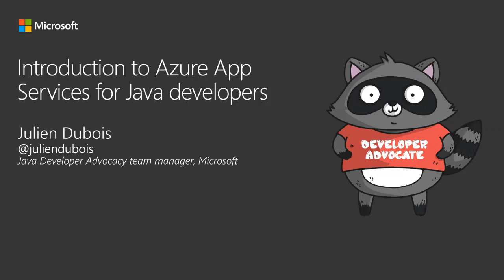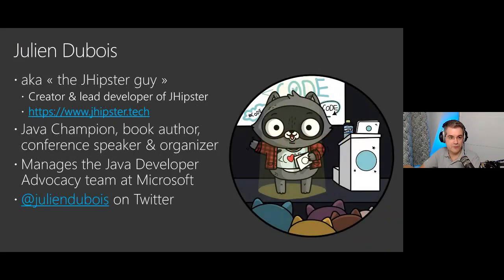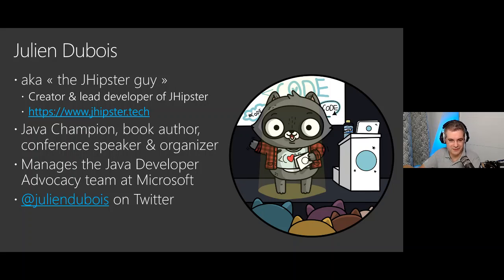Thanks a lot, Emma. I'm very happy to be with you today. So this is the third session of the Back to Basics - Azure for Java developers series. Let me introduce myself first. I'm Julian Dubois. People usually know me because of a project called JHipster - you can check it out at jhipster.tech. It's a code generator for Java and it works on App Service, so it's one of the subjects for today.